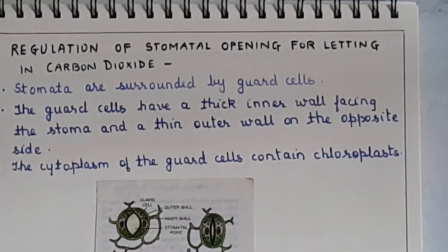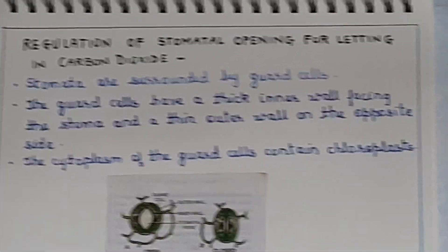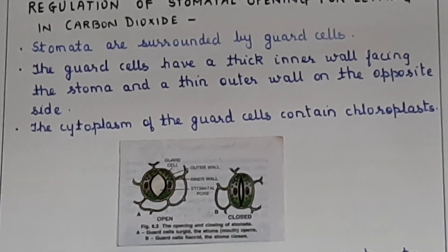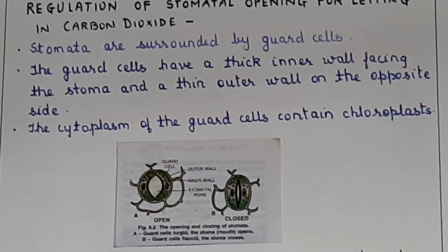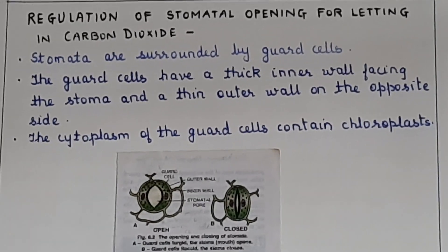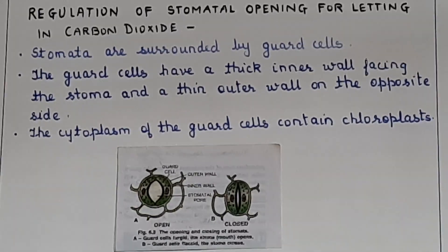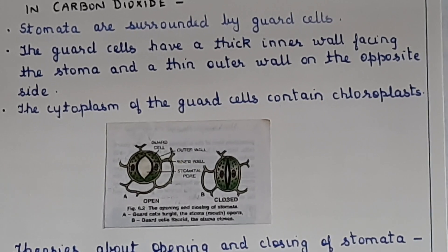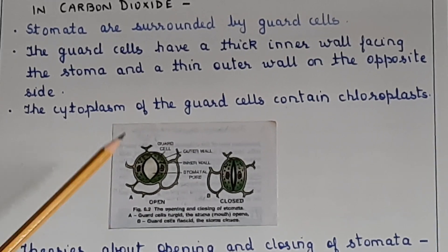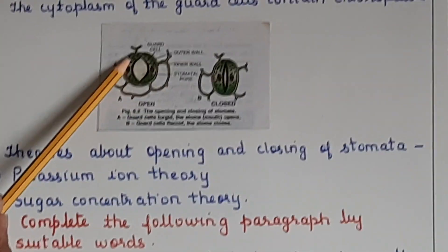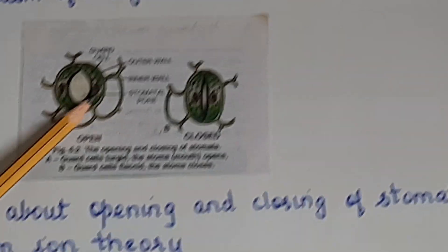Now we will see the regulation of the opening and closing of the stomata, because through open stomata carbon dioxide enters for photosynthesis. The stomatal pore is surrounded by bean-shaped guard cells, and around them are the epidermal cells. Guard cells have a thick inner wall and a comparatively thinner outer wall, which facilitates holding water and becoming turgid.